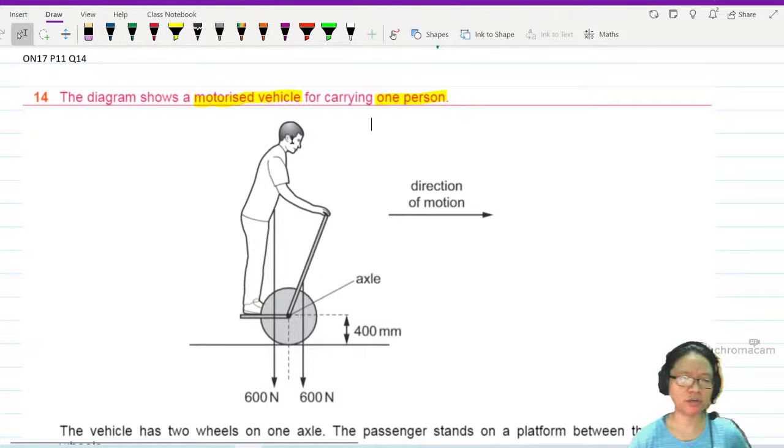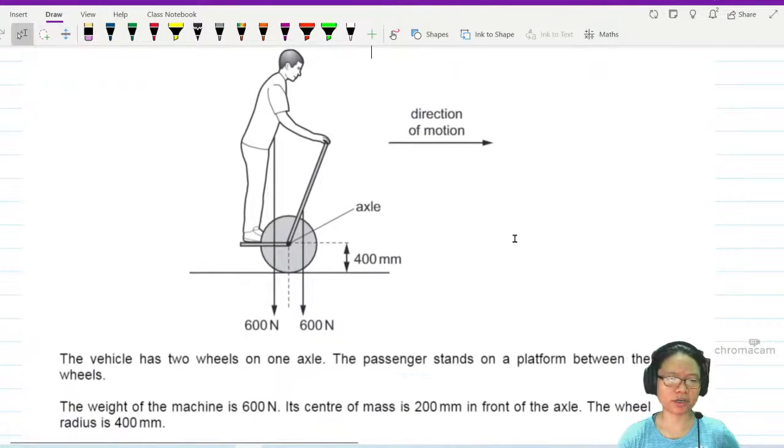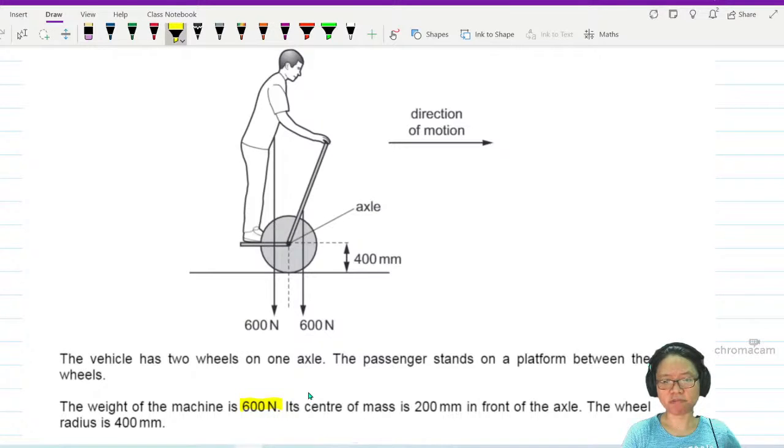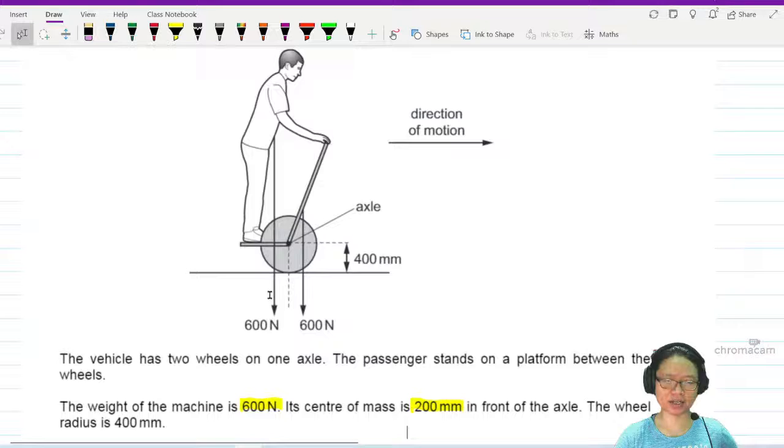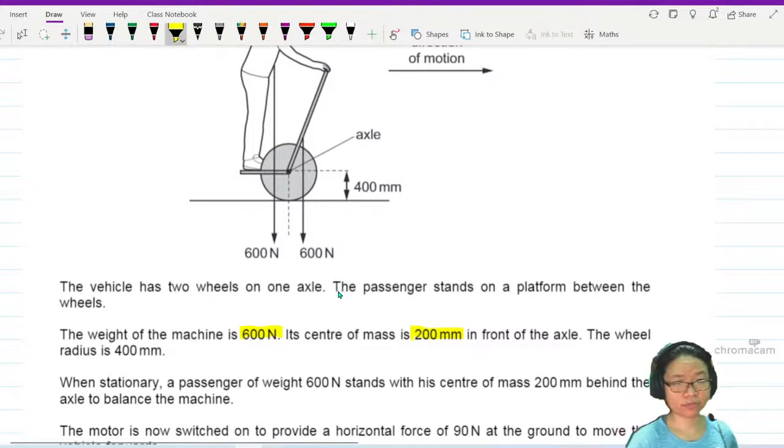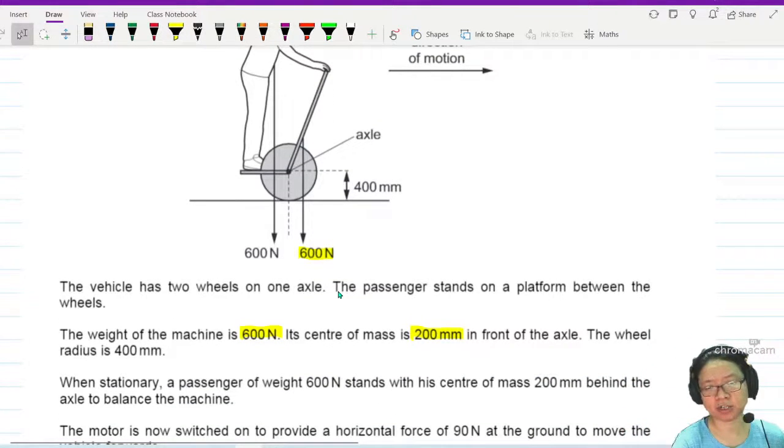This human being is on site here, and it's moving in this direction. The vehicle has two wheels on the axle. The passenger stands on a platform between the wheels. The weight of the machine is 600 Newton. The center of mass is 200 mm in front of the axle. So this is represented by this 600N arrow.